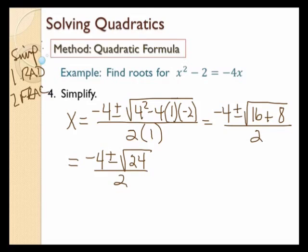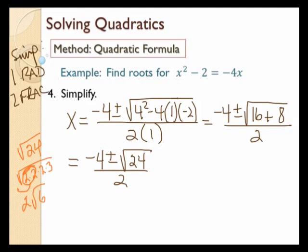I need to keep simplifying the radical. The square root of 24 is the square root of 2 times 2 times 2 times 3. I circle my 2s and bring one out, so that gives me 2 square root of 6. I'm going to replace the square root of 24 with 2 square root of 6. So I have negative 4 plus or minus 2 square root of 6 all over 2. I'm done simplifying the radical.